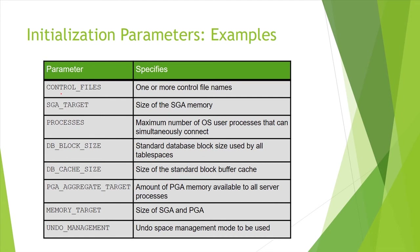This table shows some of the parameters stored inside the parameter file. control_files points to the location and name of the control files of the database. sga_target is the size of the SGA memory, which is part of the instance. processes is the maximum number of OS user processes that can simultaneously connect to the Oracle database. db_cache_size is the size of the database buffer cache. pga_aggregate_target is the amount of PGA memory available to all server processes.